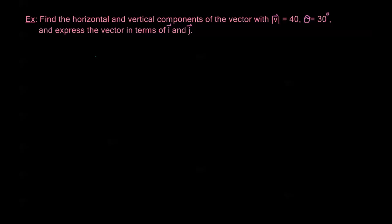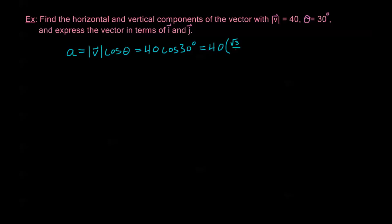First I need to find my A and B — that's my horizontal and vertical components. My horizontal component A is equal to the magnitude of V times cosine theta. The magnitude of V is given as 40 and theta is 30 degrees, so this is 40 times cosine of 30 degrees, which is root 3 over 2. So my horizontal component A is equal to 20 root 3.